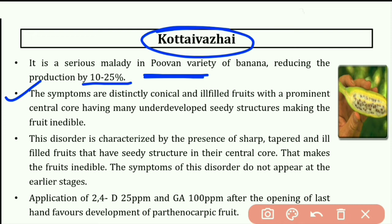The next disorder is Kotai Vajay. The symptoms are distinctly conical and ill-filled fruits with a prominent center core having many underdeveloped seedy structures, making the fruit inedible. All over the fruits are deteriorated and inedible. This disorder is characterized by the presence of sharp, tapered and ill-filled fruits. The symptoms of this disorder do not appear at the early stage.